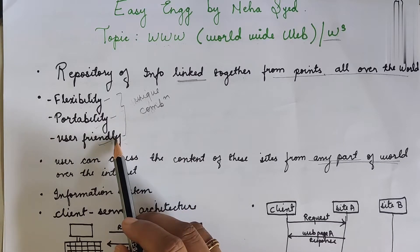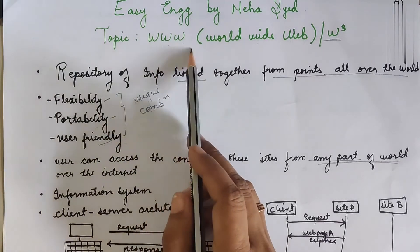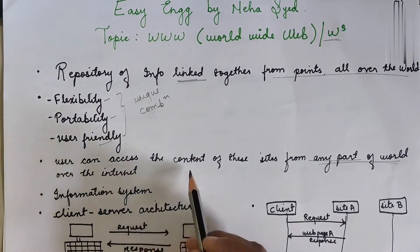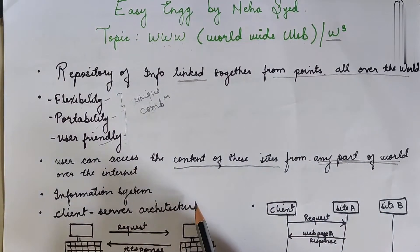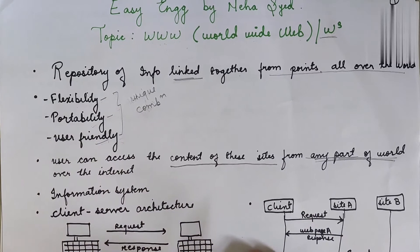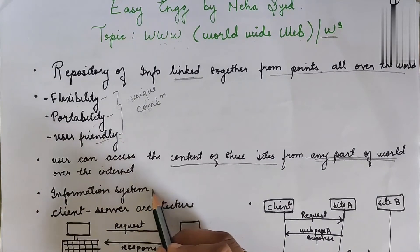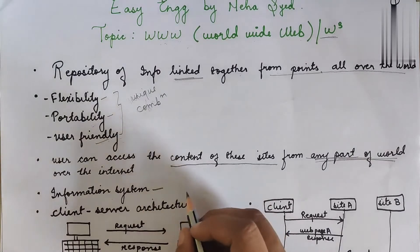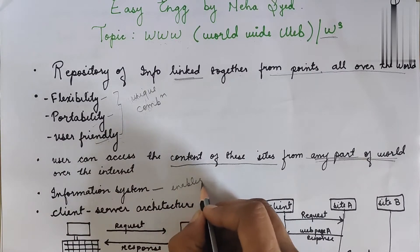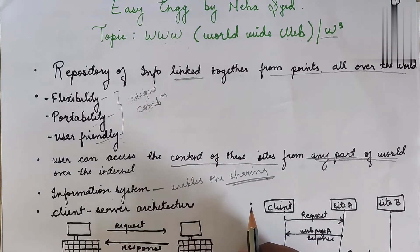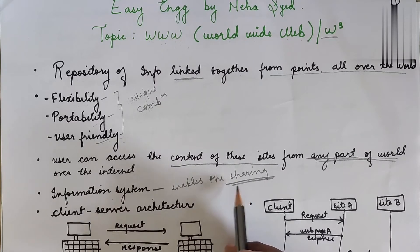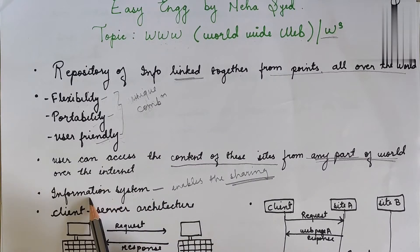Because of these three unique features, it distinguishes itself from all the other services provided by the internet, and that's why WWW is the most popular. Users can access the content of sites from any part of the world over the internet using their laptops, computers, or cell phones. In simple words, it is an information system that enables sharing of information — text, audio, or video — over the internet.